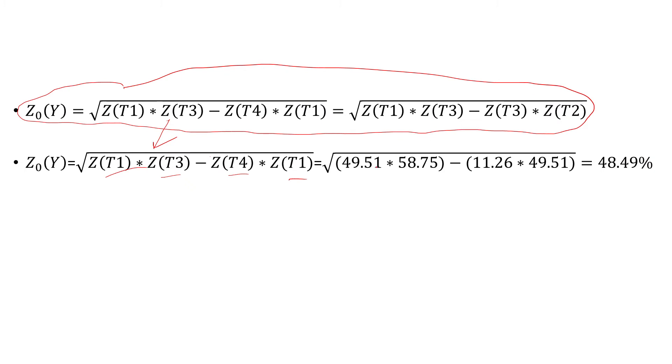So that's what I'm doing: 49.5% times 58.7% minus 11.26% times 49.51%, which comes to 48.49%.